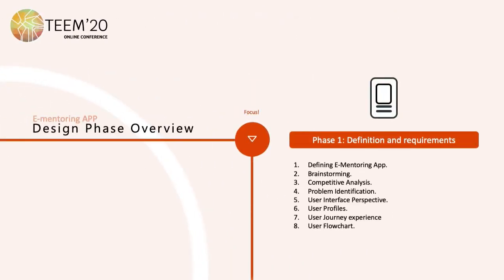Requirements to design our mobile application. There are four fundamental phases in the creation of e-mentoring applications. The first phase is definition and requirements. The following actions were taken for this phase.